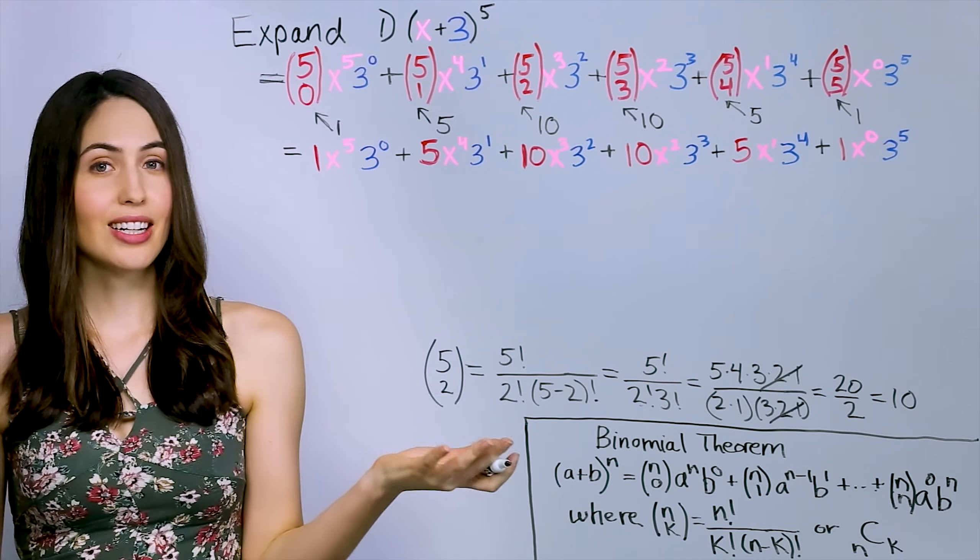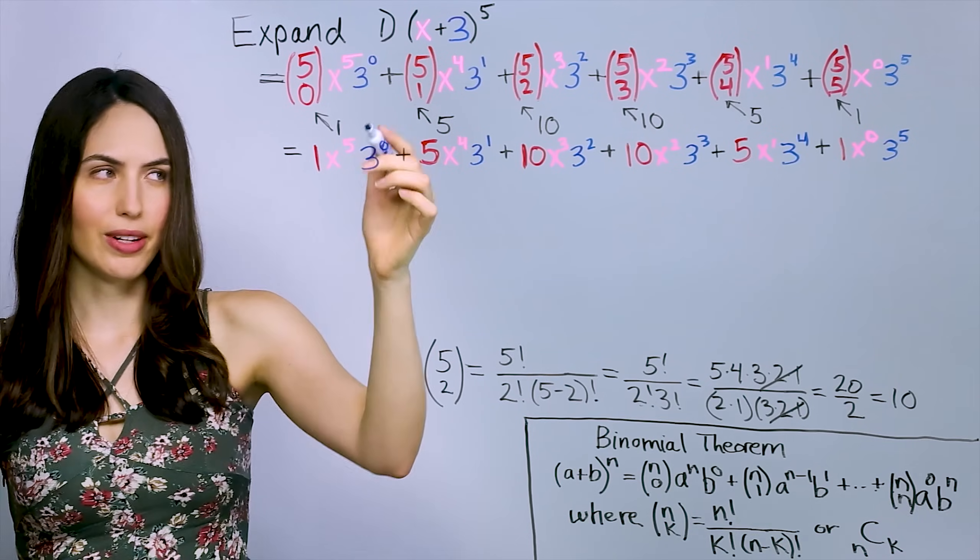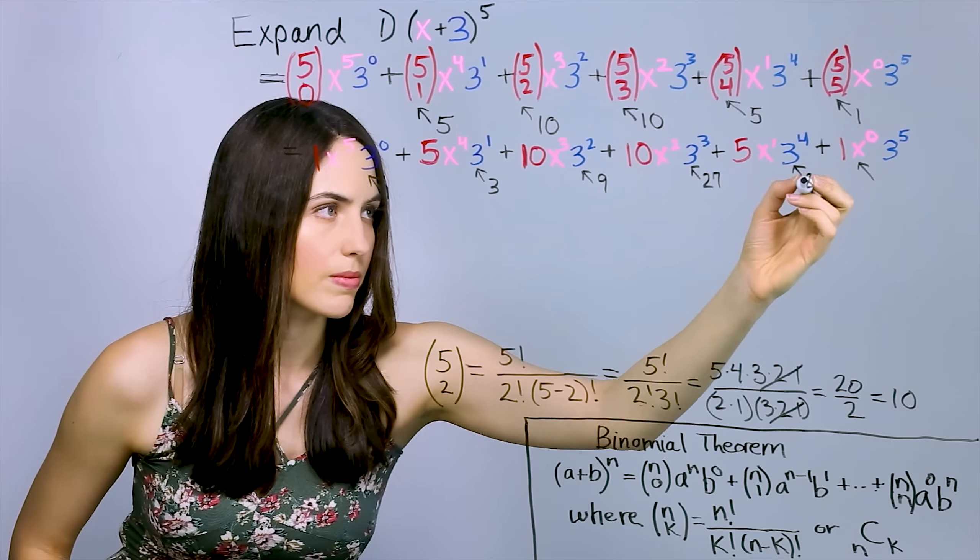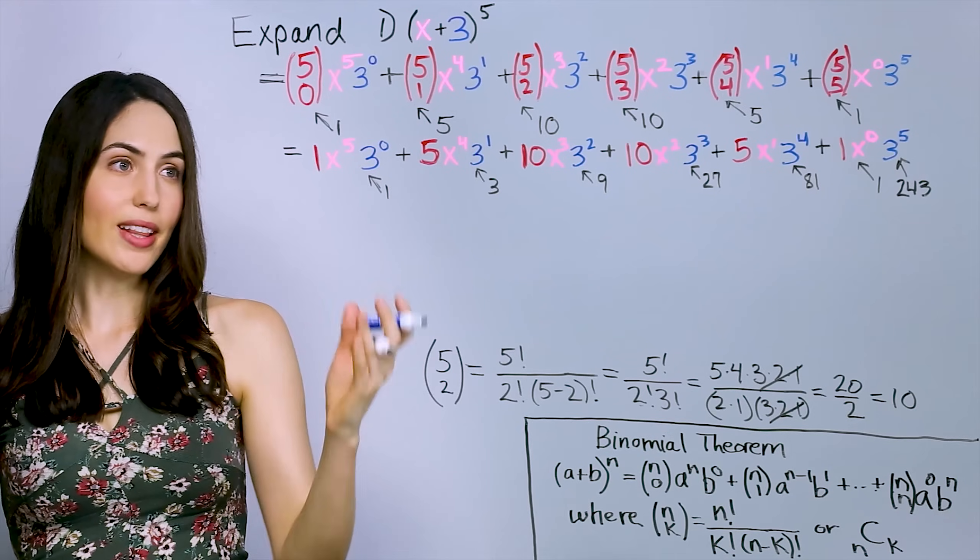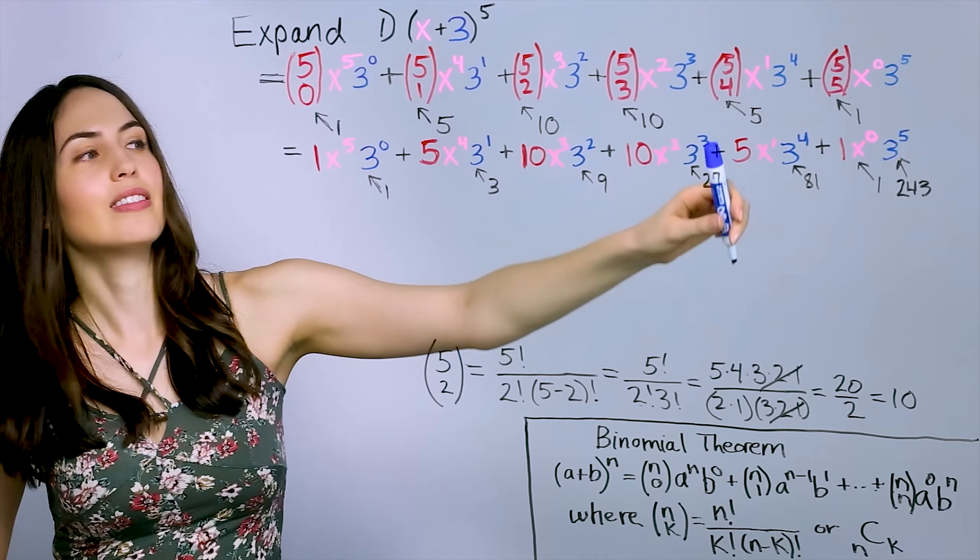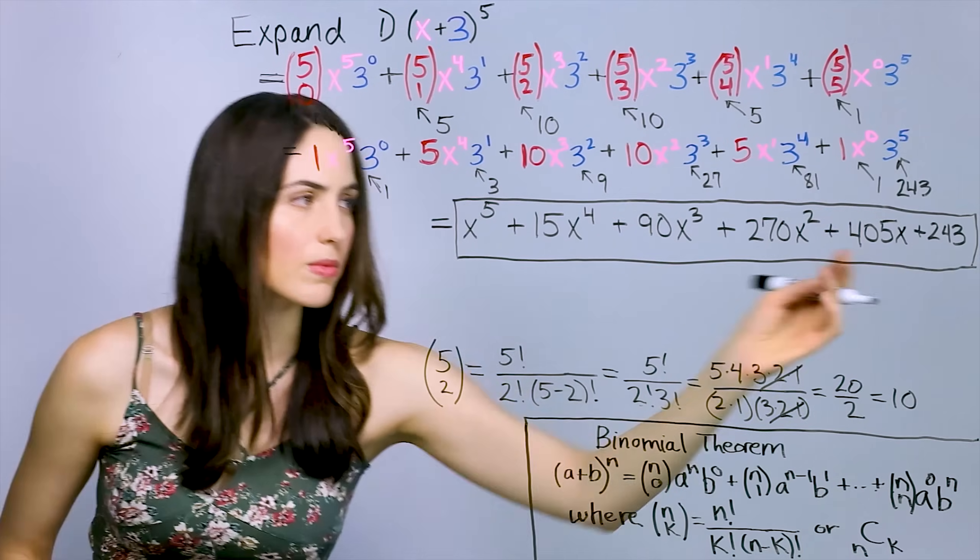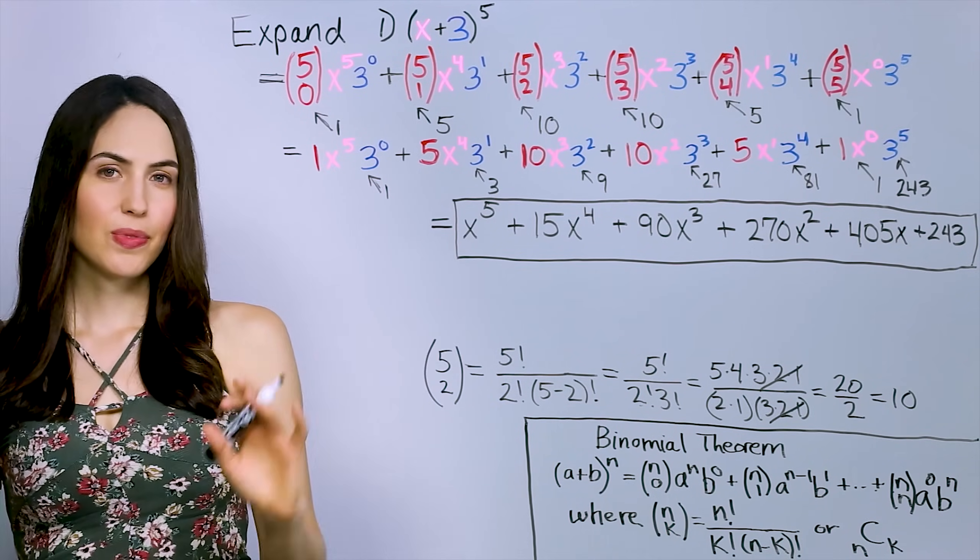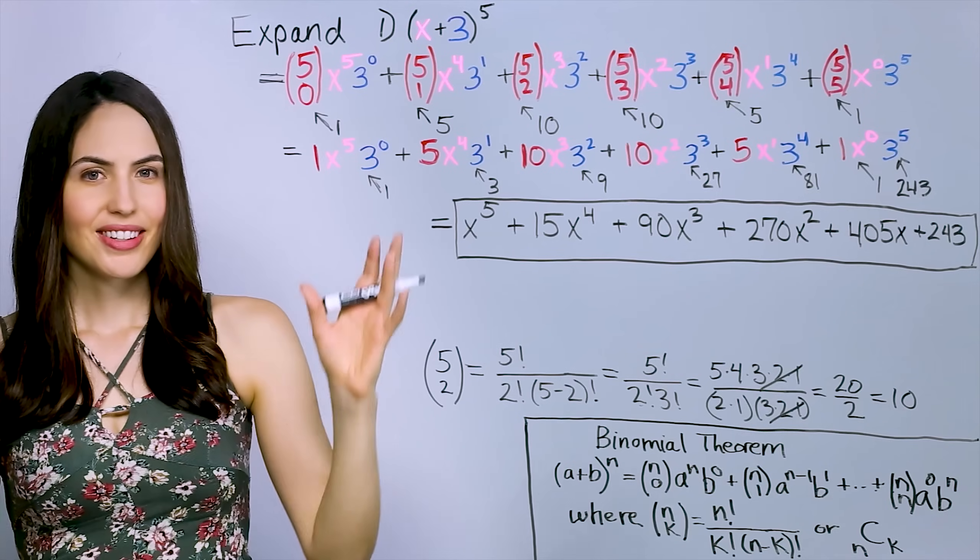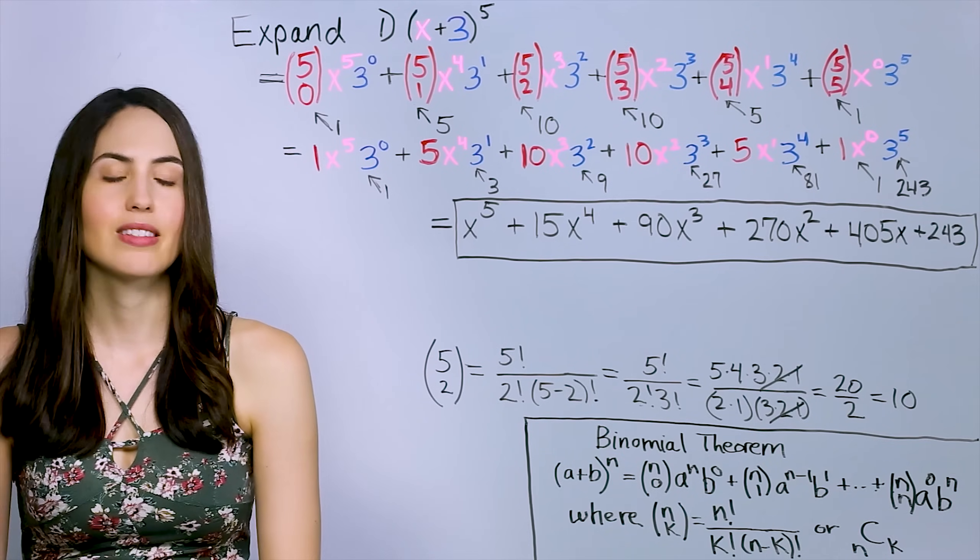So this is it. We just need to clean it up a little bit. Like anything to the power of 0 is just going to be 1. So 3 to the 0, x to the 0, those are just 1. And also we can just write what these powers of 3 really are, like 3, 9, 27, 81, 243. So that's it. That's the answer. And you don't need to write these ones when you're multiplying by ones, by the way. It doesn't matter in the end. This is the simplified answer. This is your expansion. Good times.